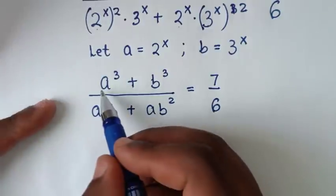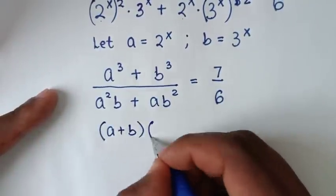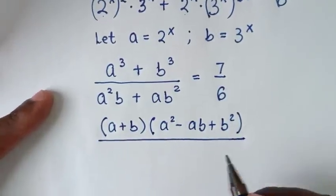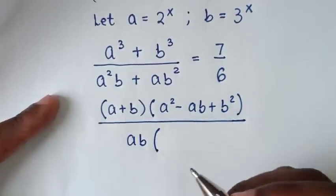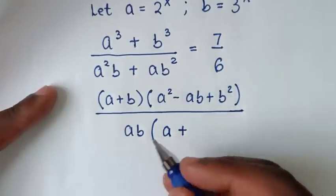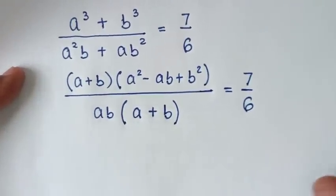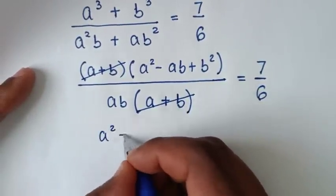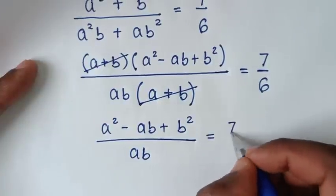The numerator a³ + b³ factors as a perfect cube sum: (a + b)(a² - ab + b²). In the denominator, a²b + ab² has ab as a common factor, giving ab(a + b). So the equation becomes (a + b)(a² - ab + b²) / [ab(a + b)] = 7/6. The (a + b) terms cancel, leaving (a² - ab + b²) / ab = 7/6.